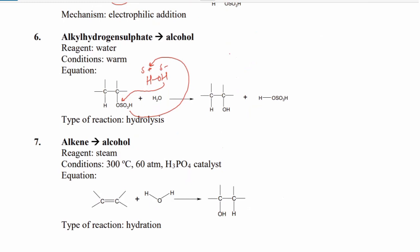Alkene can also be directly converted into alcohol by hydration — that is, the addition of a water molecule. The conditions are 300°C, 6 atm pressure, and H₃PO₄ (phosphoric acid). Water has partial positive and partial negative charge. From here the bond is broken down and hydration takes place — this is the same type of electrophilic addition.